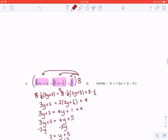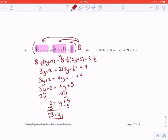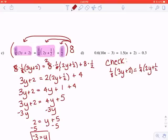It does say to verify your solution at the top of the page. So you would go through and do a check. Remember, the check has to come from the original equation. So check is going to be 1/8 times 3y plus 2 equals 1/4 times 2y plus 1/2 plus another 1/2.